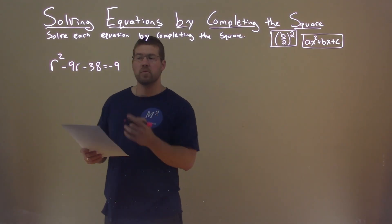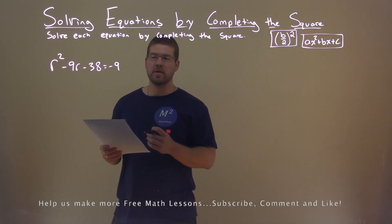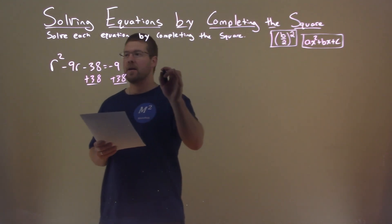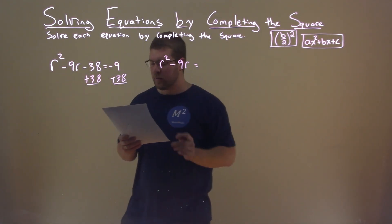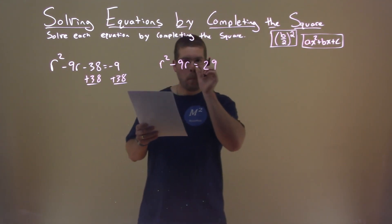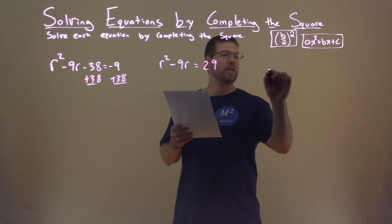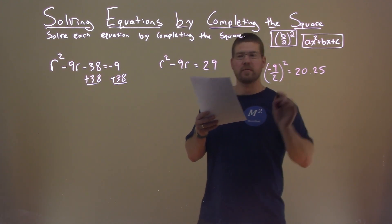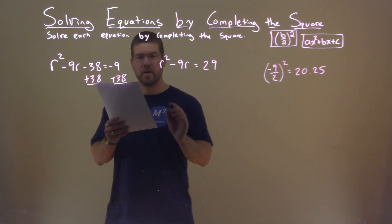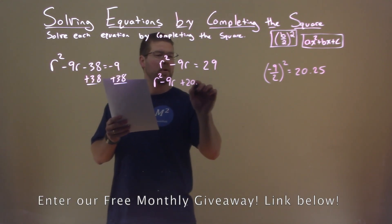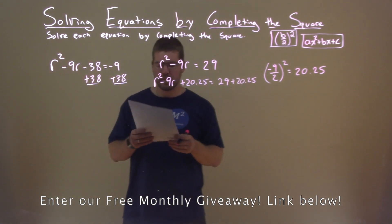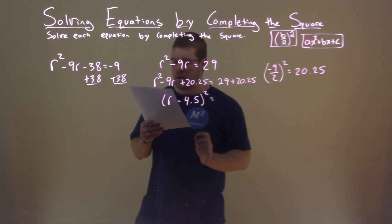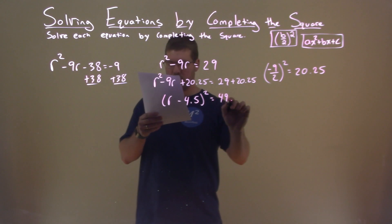We're given this problem right here: r squared minus 9r minus 38 equals negative 9, and we need to solve this by completing the square. First thing I'm going to do is add 38 to both sides, giving r squared minus 9r equals negative 9 plus 38, which is positive 29. I'm now going to look at my B value, negative 9. Negative 9 divided by 2, all squared, comes out to be 20.25. Adding 20.25 to both sides: r squared minus 9r plus 20.25 equals 29 plus 20.25. The left-hand side is a perfect square — r minus 4.5, all squared — and 29 plus 20.25 is 49.25.